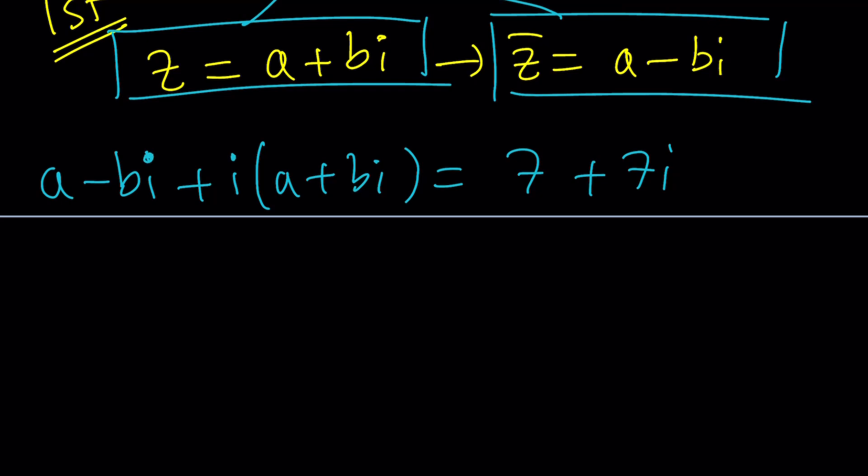Now, let's simplify this. First step, how do you simplify this? You distribute the I. I times A is A I, like artificial intelligence, but not quite there. I times B I is B I squared, but I squared is equal to negative 1. Hopefully you knew that. That's very important. One thing that you should never forget. So that's going to be minus B, and that is equal to 7 plus 7I.